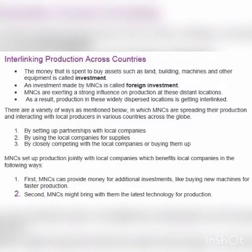Interlinked production across countries involves investment — the money spent to buy assets such as land, buildings, machines, and other equipment. Investment made by MNCs is called foreign investment. MNCs exert a strong influence on production at distant locations, and as a result, production in these widely dispersed locations is getting interlinked.